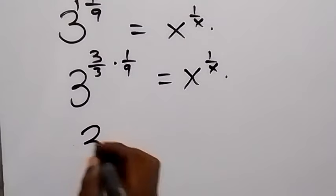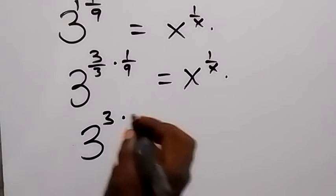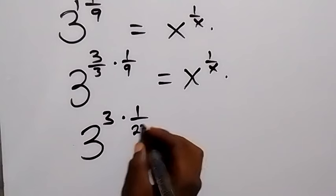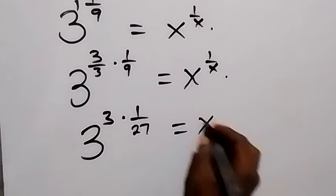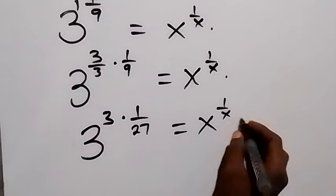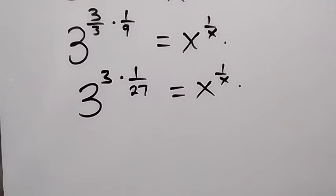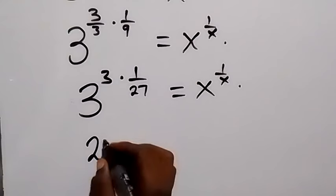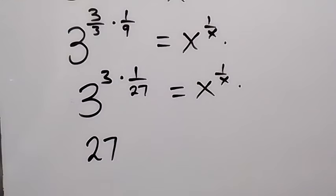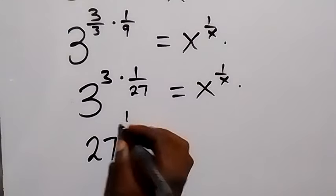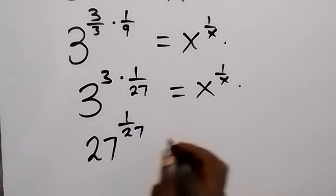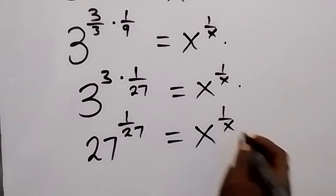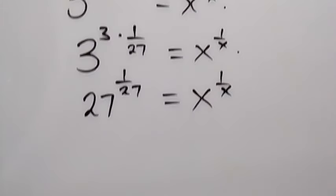We have 3 raised to the power 3, then times 1 over 3 times 9 — that's 27 — equals x raised to the power 1 over x. From here we can also write 3 raised to the power 3 as 27: that's 3 times 3 times 3, which is 27, raised to the power 1 over 27. That equals x raised to the power 1 over x.